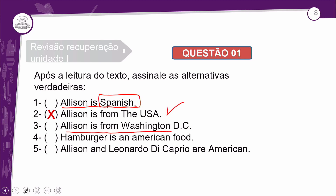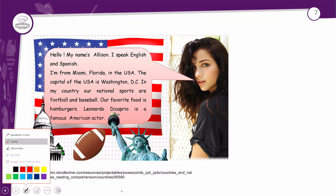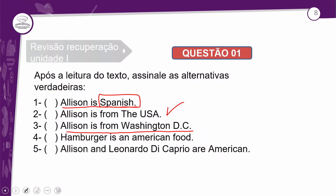'Alison is from Washington, D.C.' — será que ela é de Washington? Olha no texto: ela comenta sobre Washington D.C. dizendo que é a capital dos EUA, mas não fala que ela veio de lá. Não há nenhuma situação onde ela usa 'from' com Washington. Ela fala 'I'm from Miami', que fica na Flórida, nos Estados Unidos. Então, ela não é de Washington — essa informação não está correta.